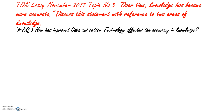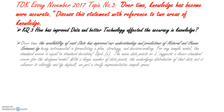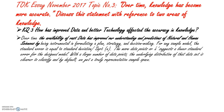Knowledge Question 3: How has improved data and better technology affected accuracy in knowledge? Over time, the availability of vast data has improved our understanding and predictions in natural and human sciences by being instrumental in formulating plans, strategies and decision making. For example, in any sample model the standard error is equal to the standard deviation divided by the square root of n. More data points, or larger n, suggests a lower standard error for the design model.